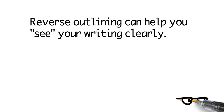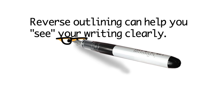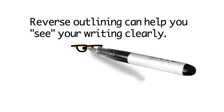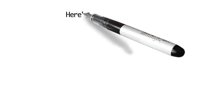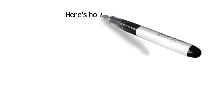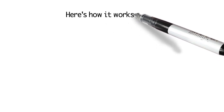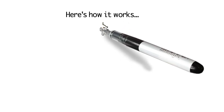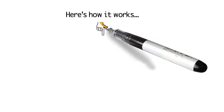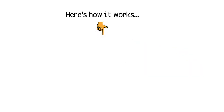Reverse outlining is a technique that can help you see your writing in a much more clear way, so that you can see where your writing is becoming confused and unfocused. So here's how it works.